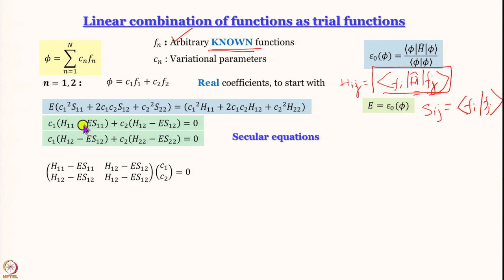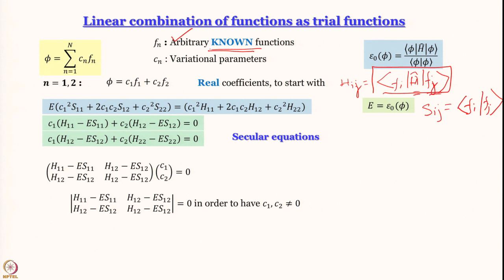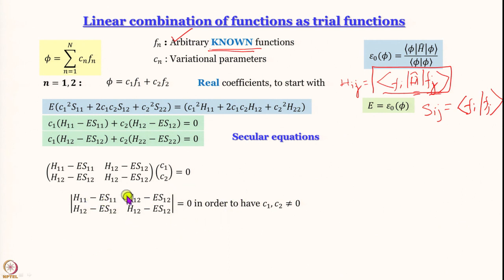E is our target. To find E we write the secular equations in matrix form, and from the theory of linear equations, for c_1 and c_2 to be non-zero the secular determinant of this matrix must equal zero. So we set the secular determinant to zero. H_11, S_11, H_12, S_12, H_22 — all can be figured out. The only unknown in the determinant is E. Expanding the determinant and setting it to zero gives, in this case, a quadratic equation which we solve to get the answers.